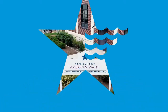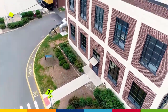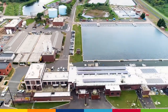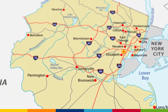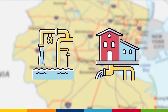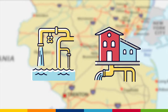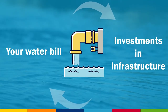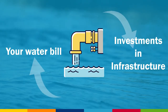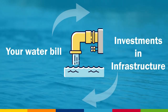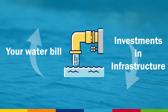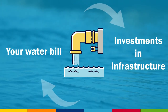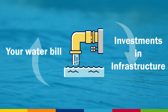At New Jersey American Water, our business is water and wastewater service. Each year, we invest hundreds of millions of dollars into our infrastructure to continue to provide you with safe and reliable water service. The money we use to invest in and improve our systems comes from your water bill, and when we file for a rate case, it helps us recover these costs so that we can continue to invest.